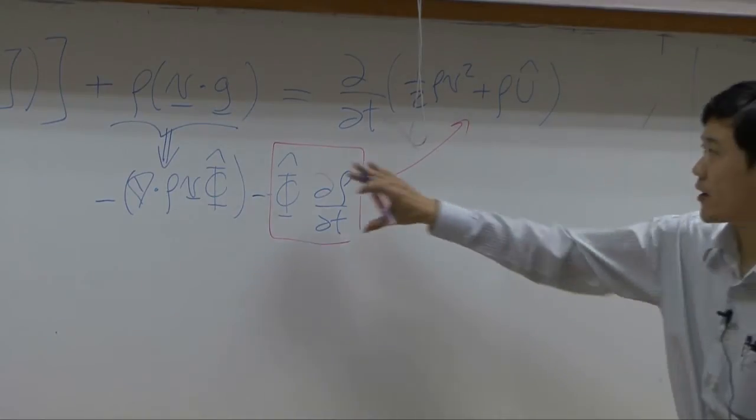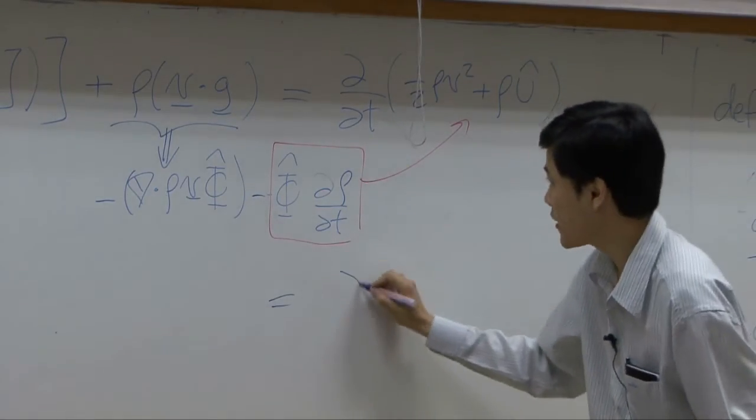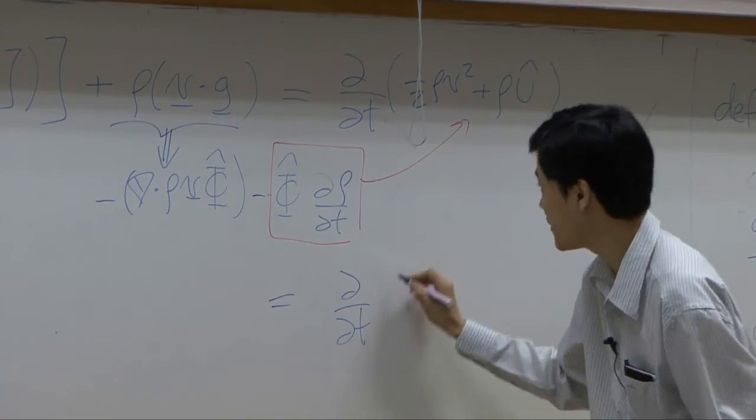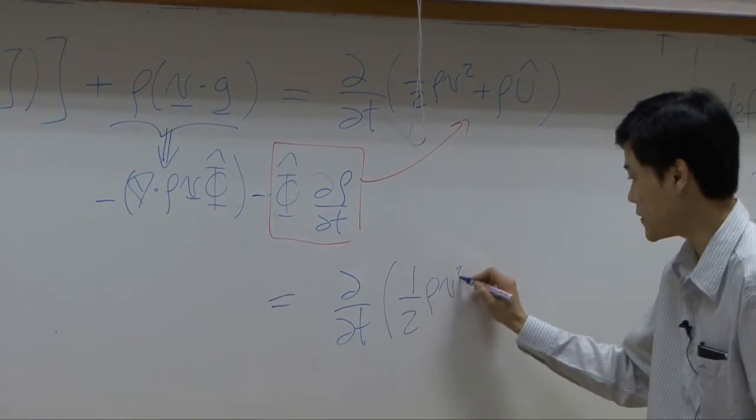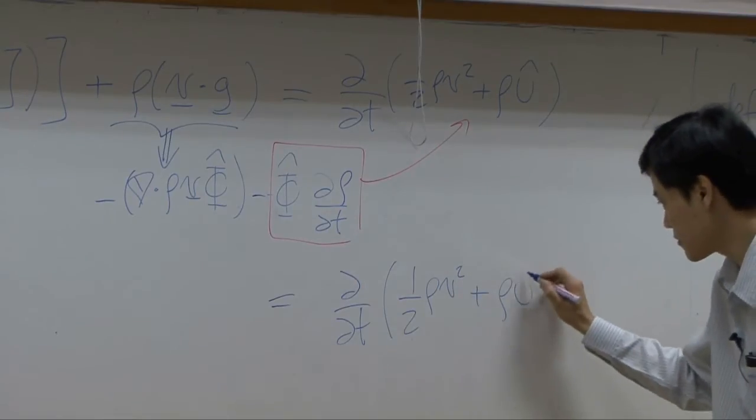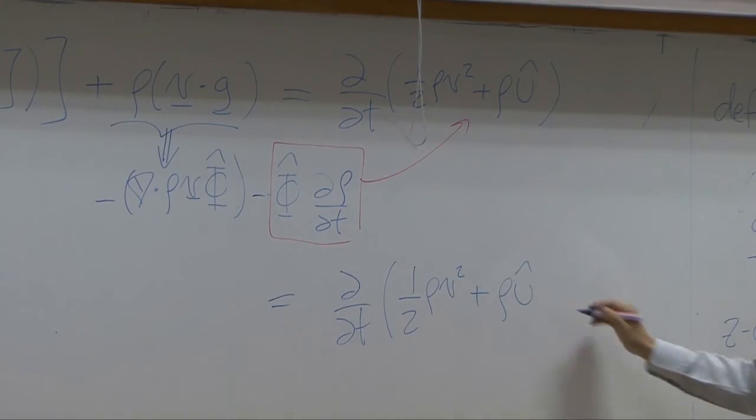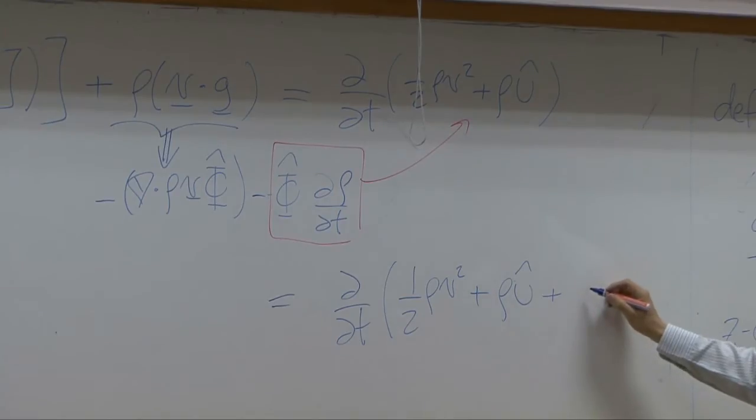So if I bring it up here, you get d by dt of 1 over 2 rho v squared plus rho u plus rho of potential energy.